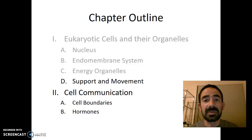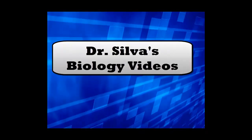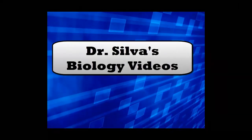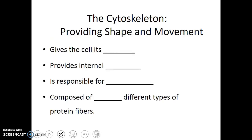Now that we've learned a bit about the energy organelles, let's talk about the support and movement of the eukaryotic cell. Plant cells have their cell walls, but animal cells don't. So let's talk a bit about the internal structure of the animal cells. They have something known as the cytoskeleton.